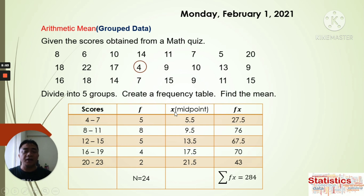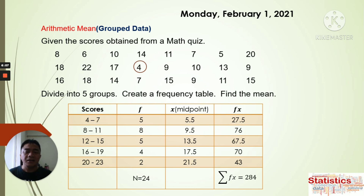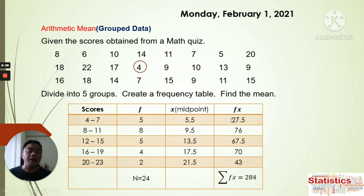Next is the midpoint, the value of x. Since we cannot use all individual data, we use the midpoint for each class. For 4 to 7 the midpoint is 5.5; for 8 to 11 it is 9.5; for 12 to 15 it is 13.5; for 16 to 19 it is 17.5; and for 20 to 23 it is 21.5. Do not round off the midpoint.